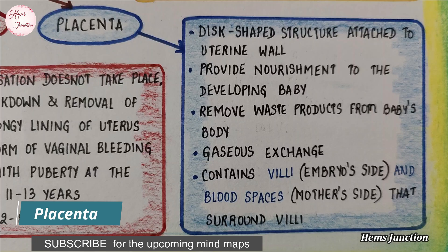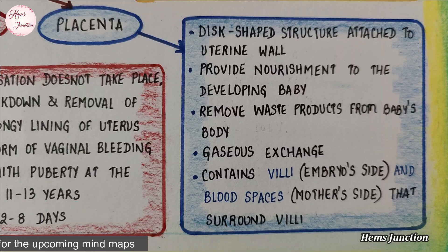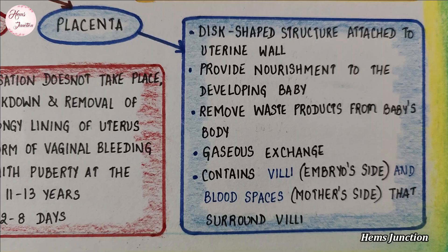Placenta is a special disc-like tissue embedded in the uterine wall. It contains villi on the fetal side of the tissue. On the mother's side are blood spaces which surround the villi. This provides a large surface area for the exchange of glucose and oxygen between the mother and the embryo. Waste substances generated by the developing embryo can be removed by transferring them into the mother's blood through the placenta.